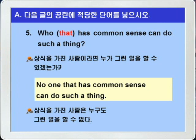5번 예문은 어떤 대답을 요구하는 것이 아니라 반어적으로 자신의 주장을 강하게 나타내 주고 있죠. 그래서 이런 의문문을 수사의문문이라고 합니다. 참고로 알아두시기 바랍니다. 정답: 'Who that has common sense can do such a thing.'